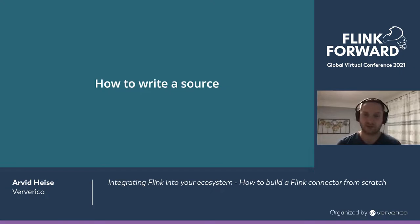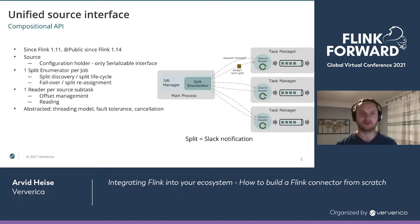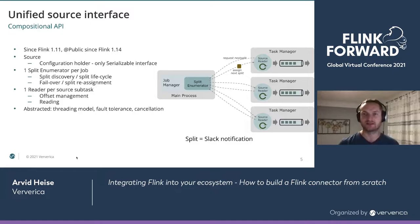For that, we first start by writing a data source. We are going to implement this source with the new unified source interface added in Flink 1.11, which has been public since Flink 1.14. It consists of three main interfaces. The first is the Source, which is only the configuration holder and the only thing that needs to be serializable — shipped to various parts of the Flink application in the JobManager and TaskManager.